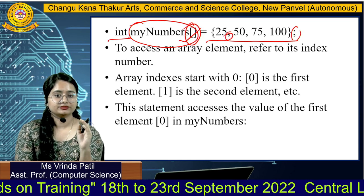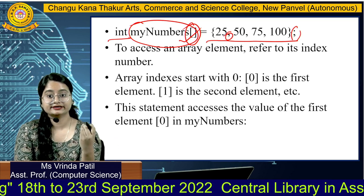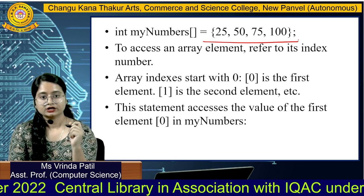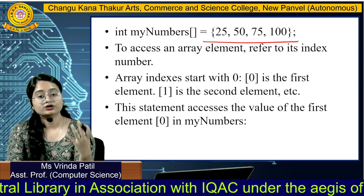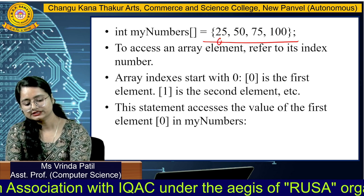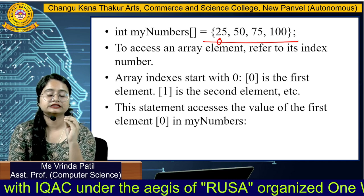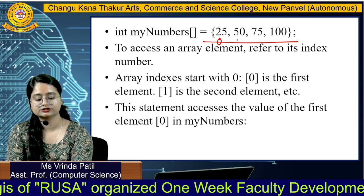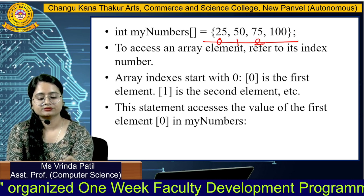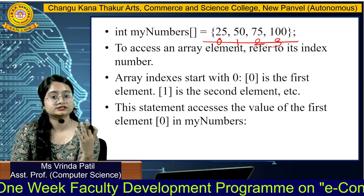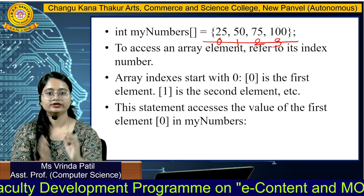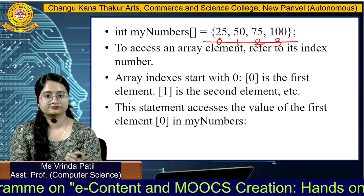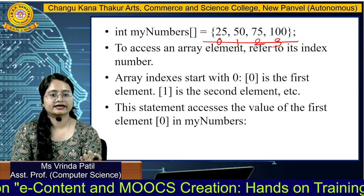To access an array element, refer to its index number. The index number always starts with 0 and is followed by the next number. So this is your zeroth index number, this is your first index number, this is your second, and this is your third index number. The range of this index is 0 to 3. Array indexes start with 0, so 0 is the first element, 1 is the second element, and so on.